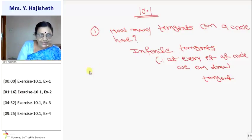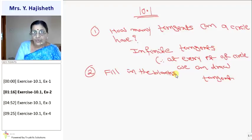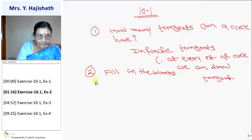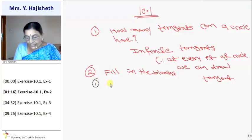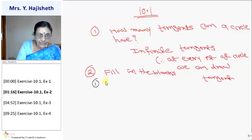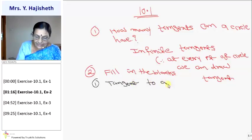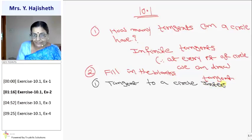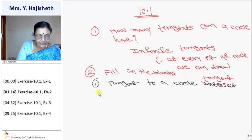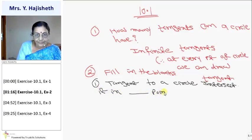Now the second question is fill in the blanks. The first fill in the blank is: a tangent to a circle intersects it in how many points? The answer is one point.